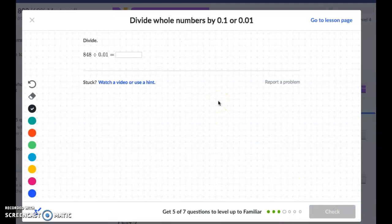So 848 divided by one-hundredth. So 848, and remember, even though we don't see that decimal, it's right here. And if I have 848 pizzas and I split them all into 100 slices, this tells you I'm going to move that decimal one, two places, and add my zeros in.